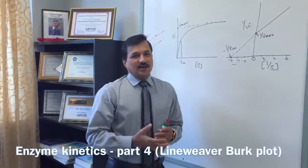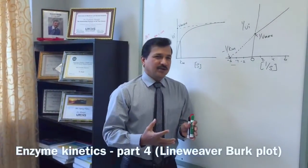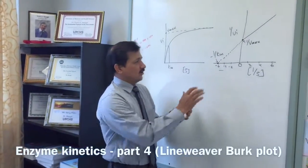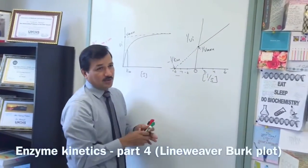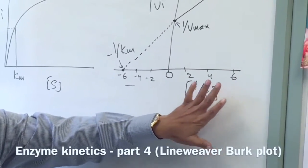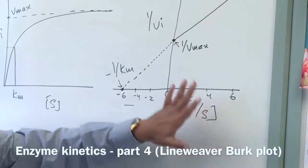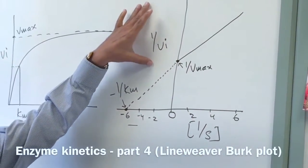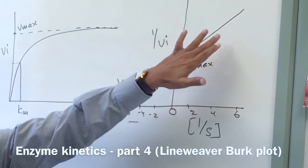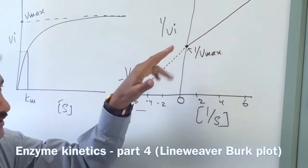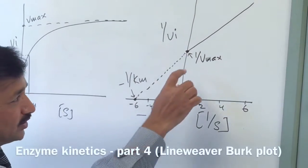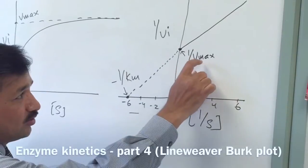Let me explain competitive and non-competitive inhibitors in relation to the Lineweaver-Burk plot. I have already drawn the Lineweaver-Burk plot here. The x-axis indicates 1 over substrate concentration, the y-axis indicates 1 over initial velocity. The reaction velocity curve is a straight line, and wherever it touches the y-axis, that particular point is 1 over Vmax.